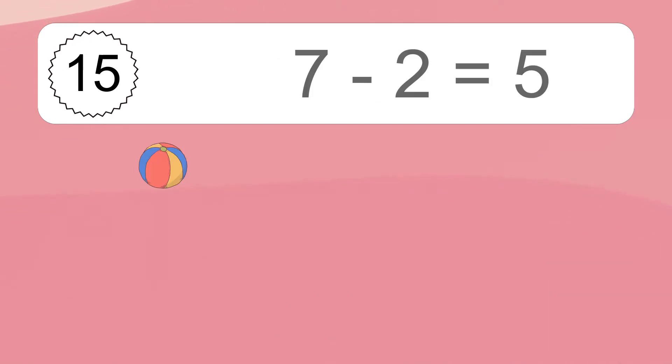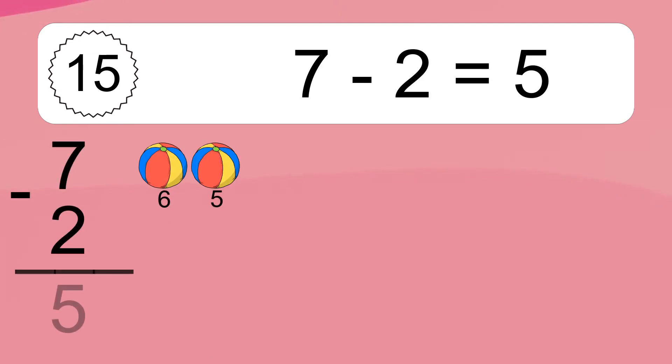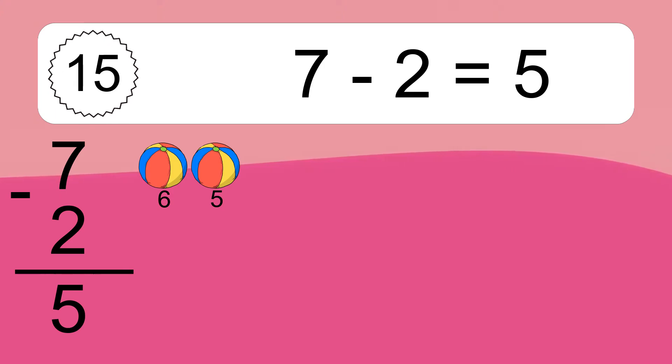7 minus 2 equals what? 7 minus 2 equals 5. Let's count it: 6, 5.